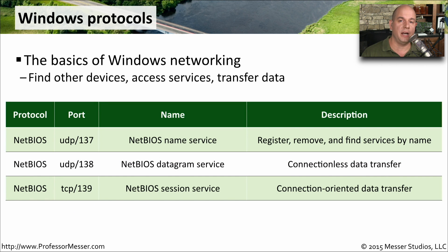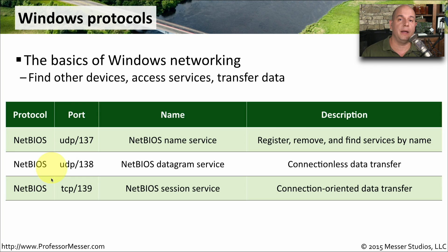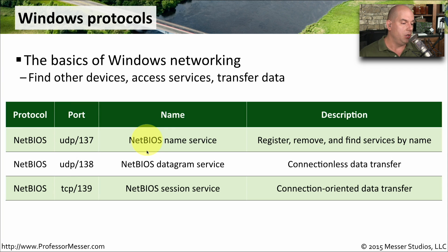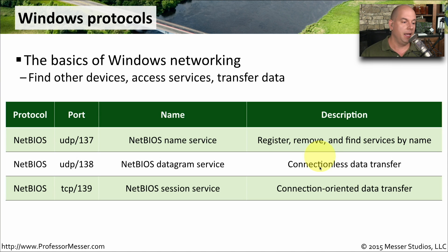Microsoft Windows has its own way of networking specific to the Windows operating system, using NetBIOS over TCP/IP — putting NetBIOS messages within the TCP/IP packets themselves. It uses both UDP and TCP depending on the protocol. UDP port 137 is the NetBIOS name service for finding a device on the network by name. UDP port 138 is the NetBIOS datagram service for connectionless data transfer between two devices. TCP port 139 is also used to send data between two Windows devices, but as a connection-oriented service because it uses TCP rather than UDP.